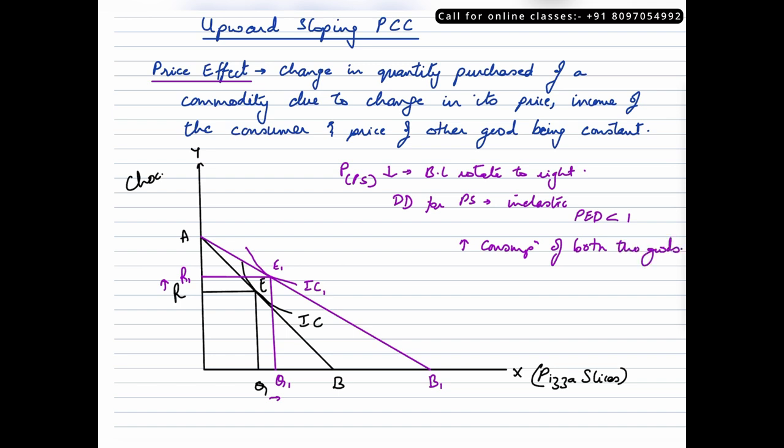So technically in this scenario, a consumer is increasing his consumption of both the goods. Now if the scenario of a reduction in price repeats again, let us say the second time again if price of pizza slices falls, what will happen? The budget line would again rotate to the right. Let us rotate it to the right. Let us name this as B2.